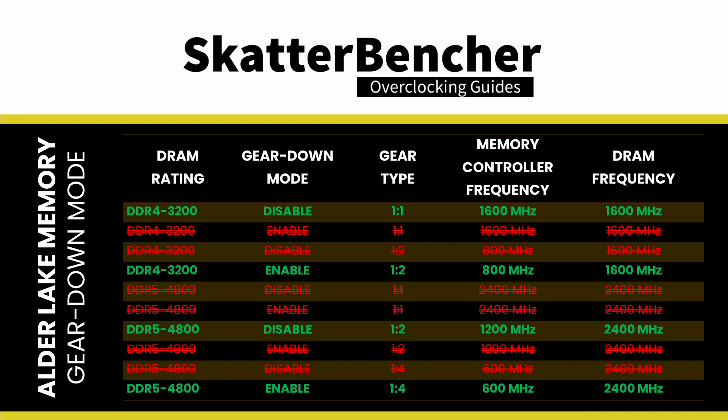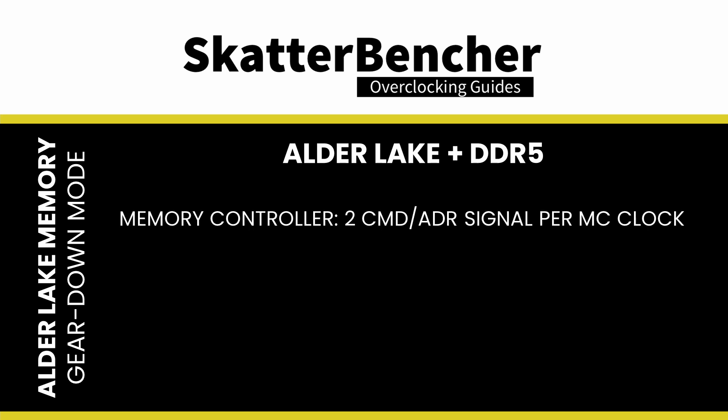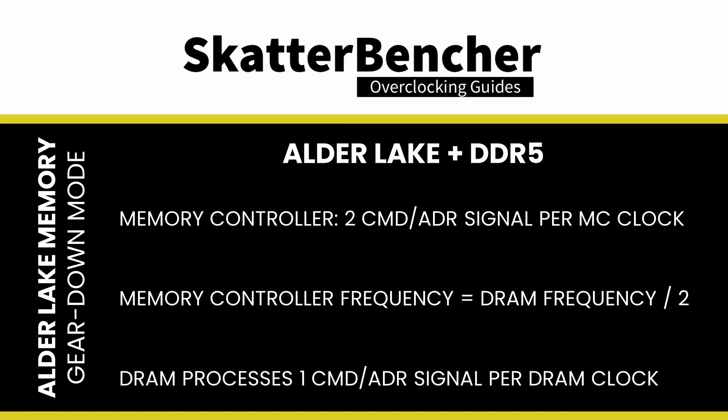When Gear Down mode is enabled, the Alder Lake DDR5 memory controller runs at a quarter of the memory frequency. To summarize, for Alder Lake and DDR5 memory, the standard configuration is that the Alder Lake memory controller sends two command address signals every memory controller clock cycle. The memory controller frequency operates at half the DDR5 memory frequency, so the effective amount of command address signals processed by the DDR5 memory is still one every memory clock cycle.